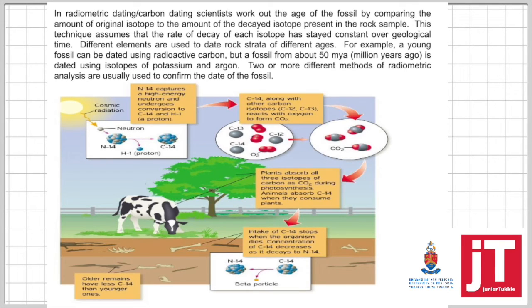Another method is radiometric dating or carbon dating. We call it carbon dating because mostly carbon isotopes are used because carbon is found in most living organisms. Scientists will look at the isotope found in the living organism and the isotope found in the fossil. Remember, isotopes are unstable.